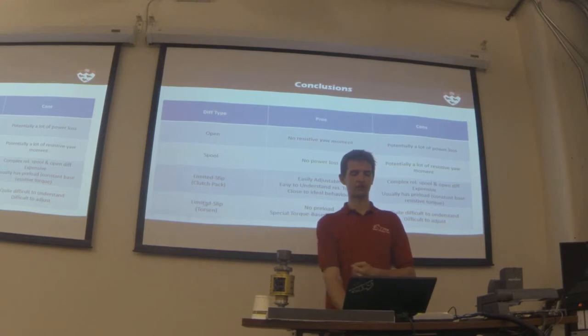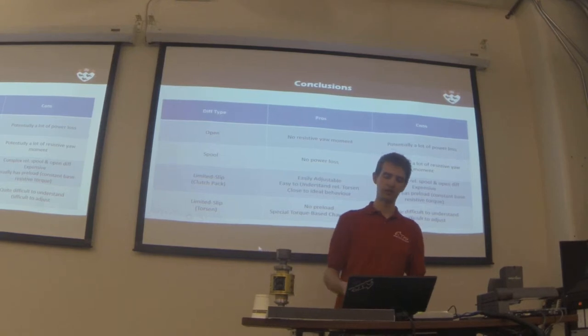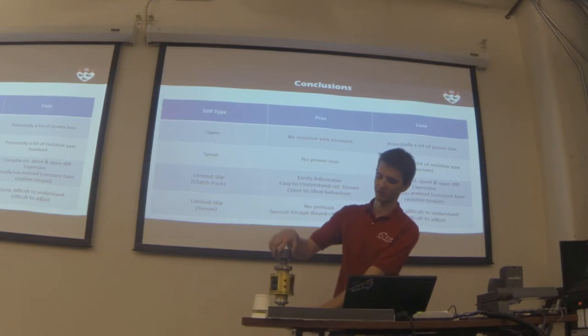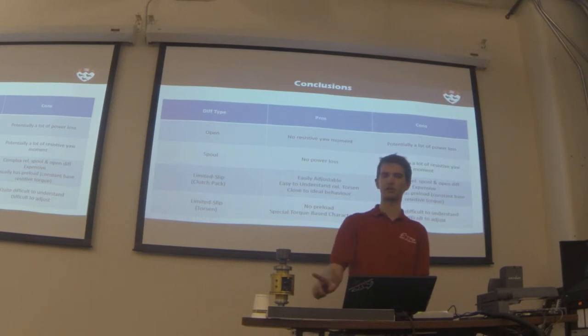Then you get to the torsion. So the advantage that the torsion has over the clutch back is it doesn't have its preload, which can be advantageous. I've been trying to determine this for the past two years. Supposedly, there's an advantage in the way these gears are configured.